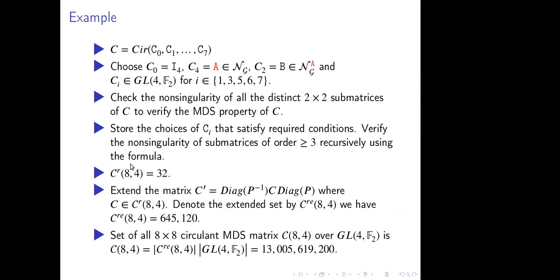The main point is to observe that the number of circulant MDS matrices over restricted domain is given by multiplying a diagonal P inverse on the left hand side and Q on the right hand side. And we call this the extended set. We have this many number of circulant MDS matrices.